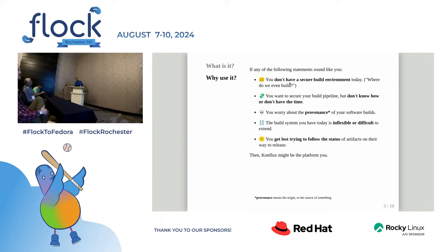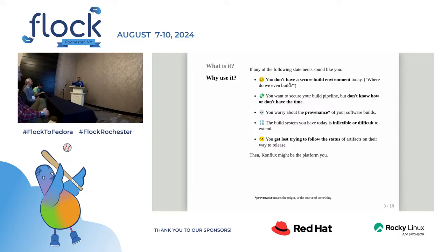In talking to other groups about adopting Conflux, people fall into different categories, and Fedora is not in the first couple. Today Fedora uses Koji, which is also focused on supply chain security — it builds in a very known and controlled way. Some people don't have a secure build system at all, and so they might consider Conflux. Others know they have supply chain security problems but don't have time to invest, so Conflux is something they can take off the shelf.